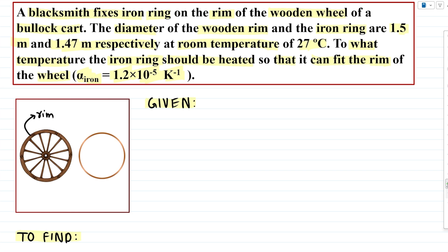And the process to attach this wheel is very fascinating from this chapter perspective. We have a ring of iron, and we ensure that initially this iron ring diameter dI is less than the wooden rim diameter dW.